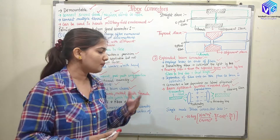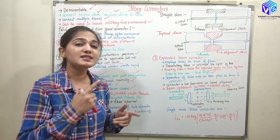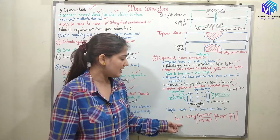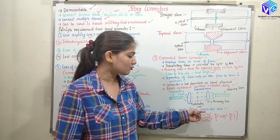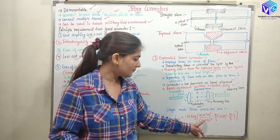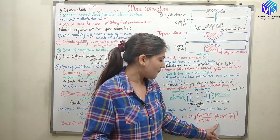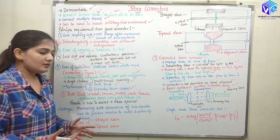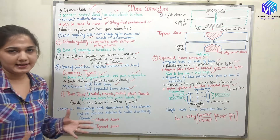For the single mode fiber connector, the loss is represented by L_SE, equal to minus 10 log of 16·n₁²·n₃² upon (n₁ + n₃)⁴, multiplied by 4σ/q, times the exponential of minus ρμ/q. This is the loss incurred by a single mode fiber at the connector.